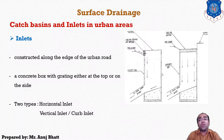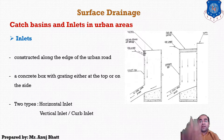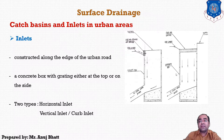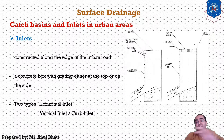An inlet is a structure constructed along the edge of the urban road to discharge rainwater into the storm water drain. An inlet is a concrete box with grating either at the top or on the side. If the grating is horizontal it is considered a horizontal inlet; if the grating is vertical it is called a vertical inlet or top inlet. Here in the figure you can see the inlet where water comes from the vertical portion — this is the vertical inlet — and from the horizontal gratings — this is the horizontal inlet. The storm water is collected to the sewer line. This covers all surface drainage.